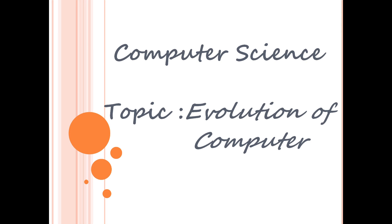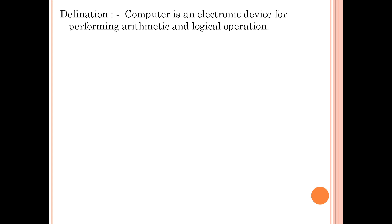Today I'm going to teach you computer science and the topic will be the evolution of computers. First, you have to know the definition. A computer is an electronic device for performing arithmetic and logical operations — so a computer can do all arithmetic and logical works.